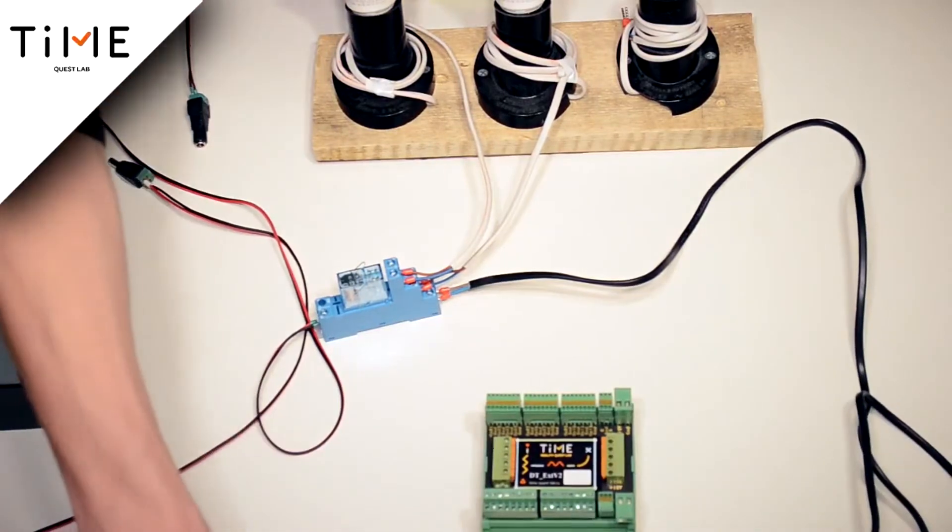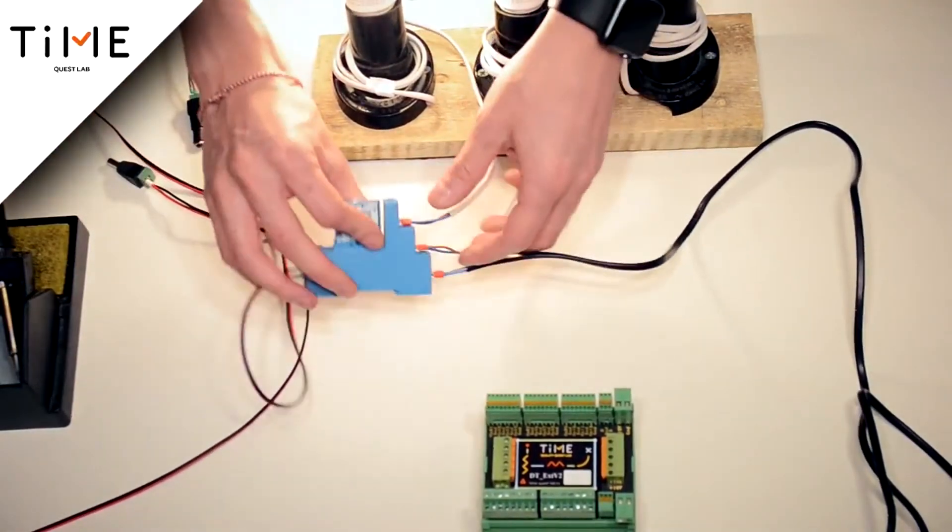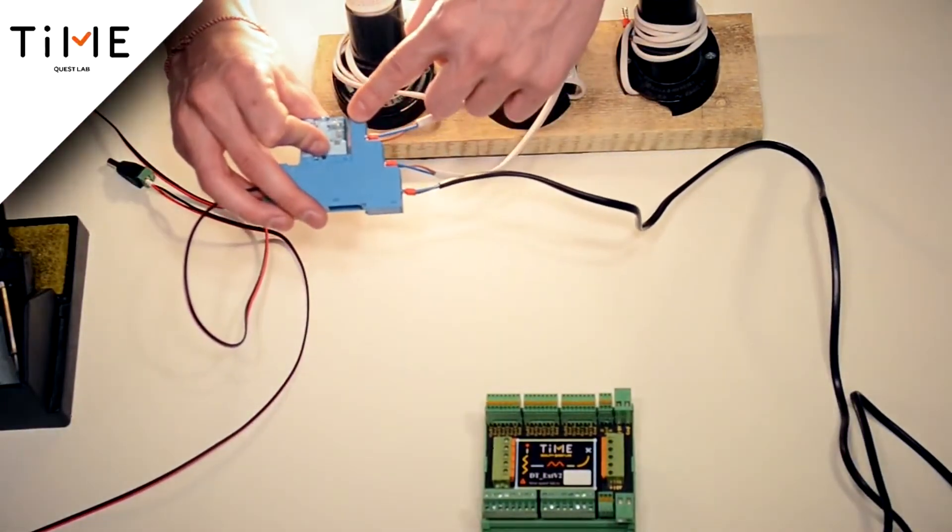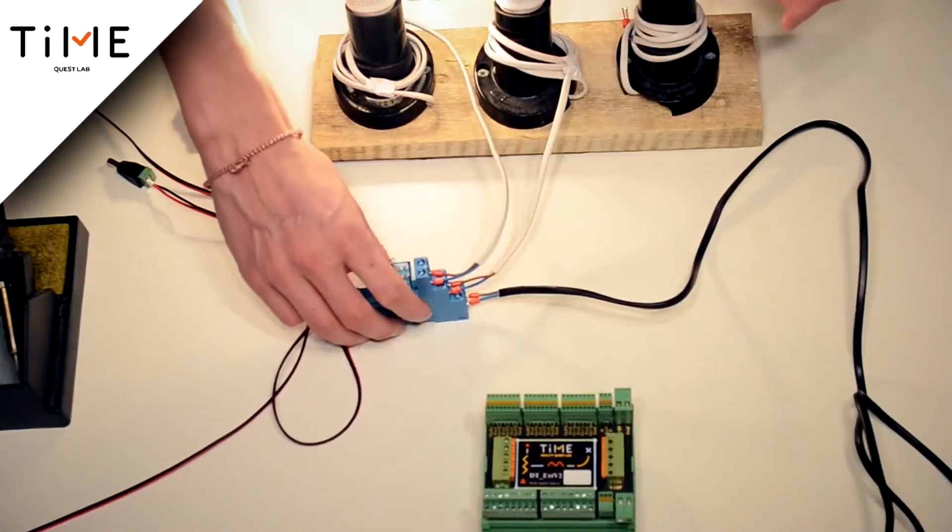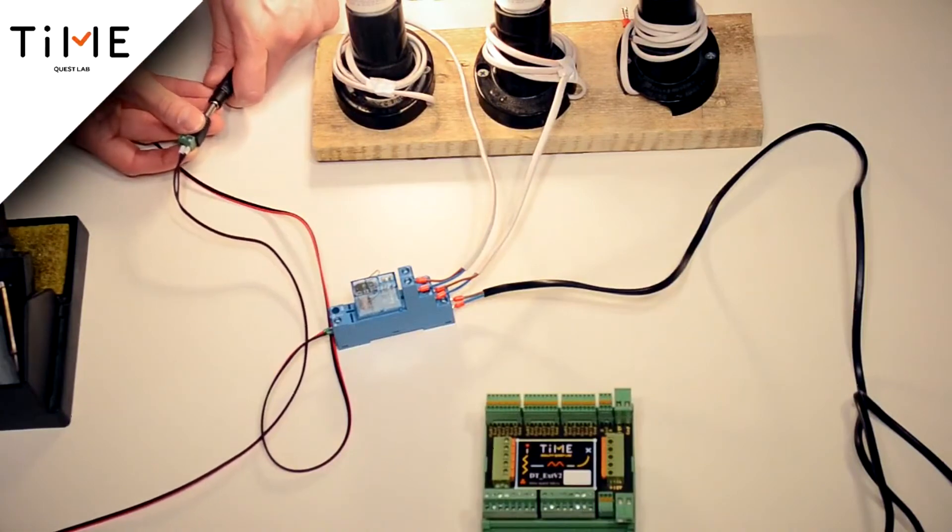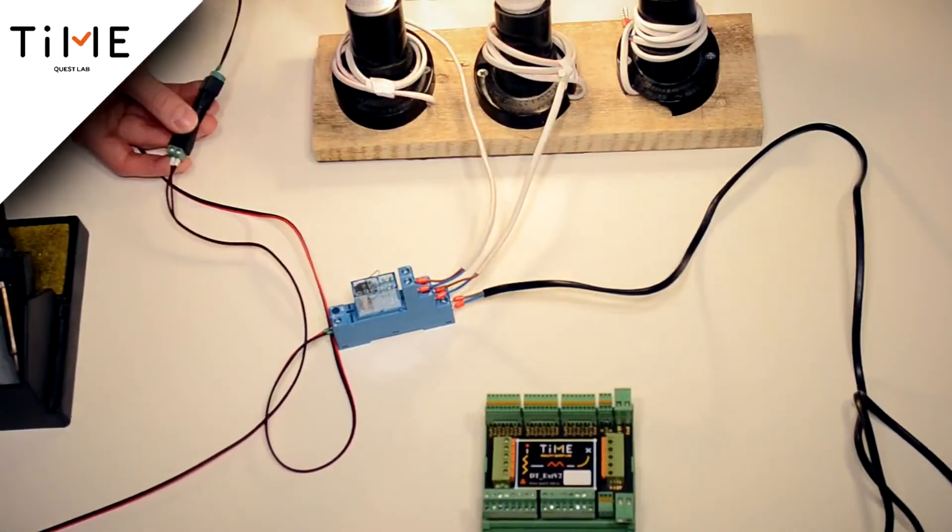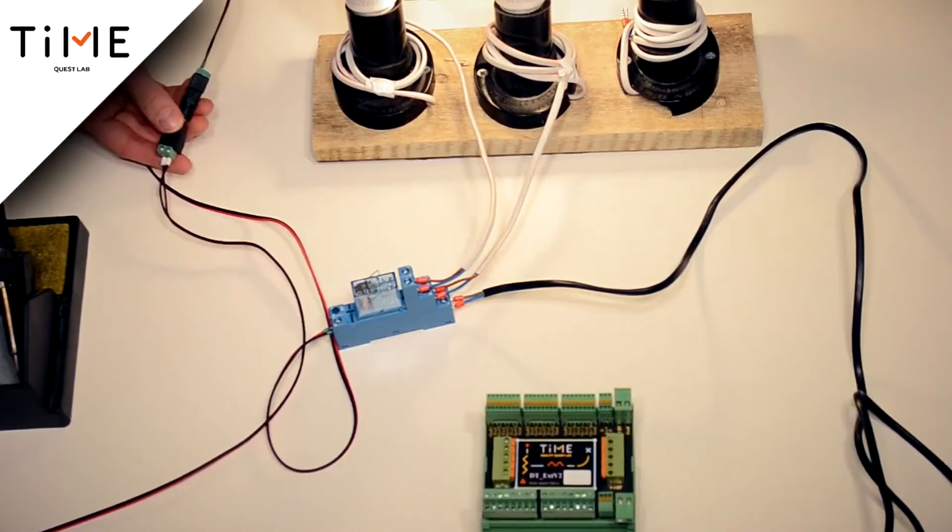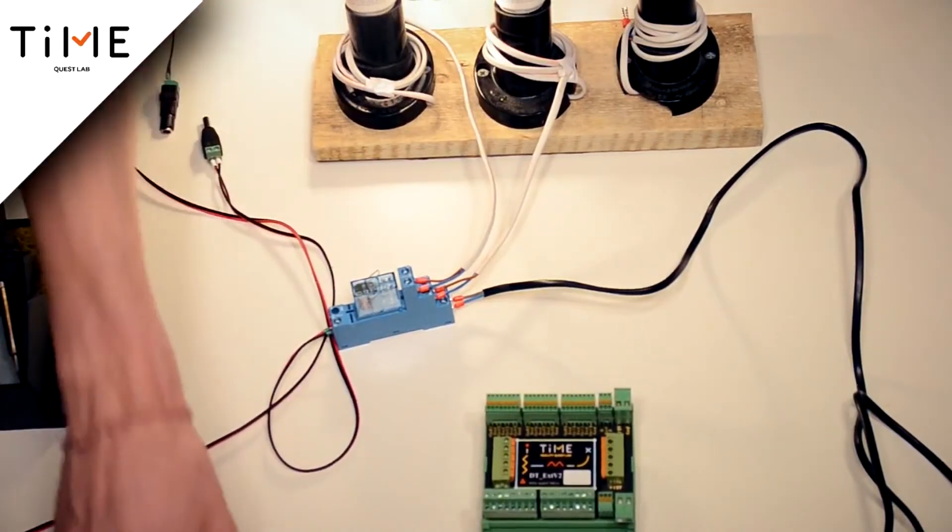What do we get? A power supply of 220V. We have this terminal normally closed with common connected. If I power the relay device, then the contacts will be thrown, the main light will turn off, and the light of the ultraviolet lamp, for example, will work.